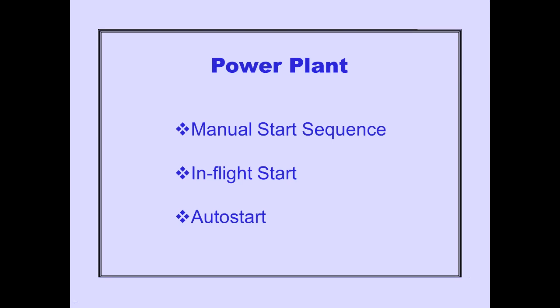In this part of power plant, we will discuss the manual start sequence, in-flight start, and auto start. First, let's look at start indications displayed on ICAS when the engines are not running.